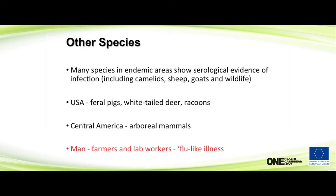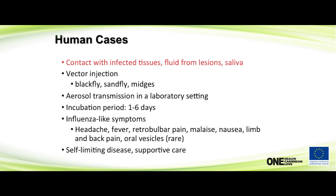In humans, it's often seen in farmers and farm workers with close association with the disease. It can cause flu-like symptoms, usually from contact with tissues. It can also be transmitted through vectors — black flies, sand flies, and midges, including Culicoides midges.